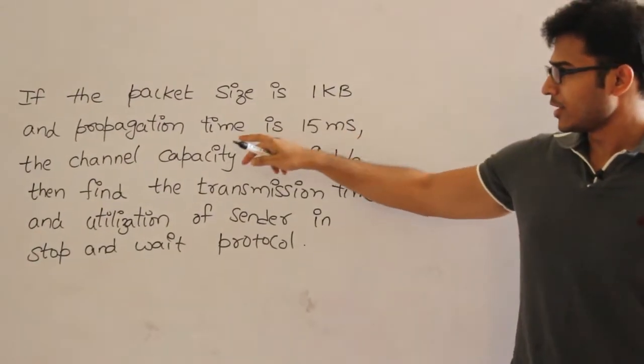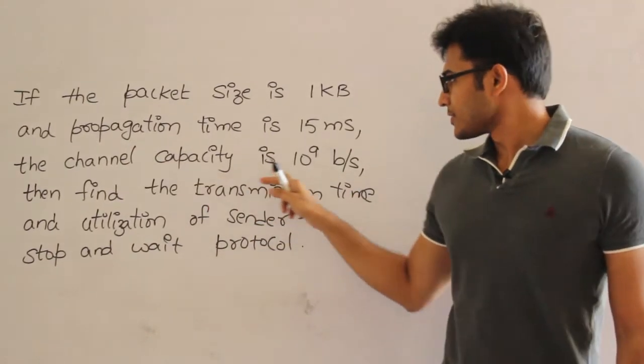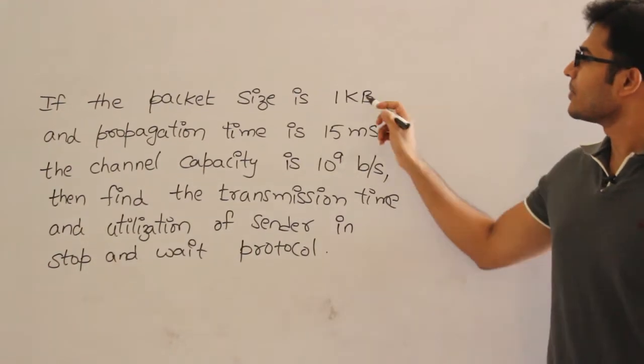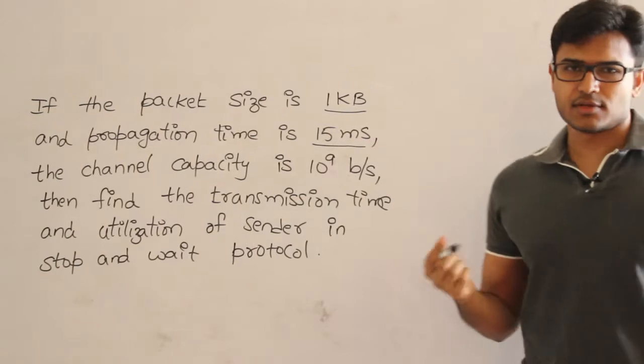Look at this. If the packet size is 1 KB and the propagation delay is 15 milliseconds, the channel capacity is 10^9 bits per second. So it is all normal. Packet size is 1 KB is fine and the propagation delay is 15 milliseconds. It is normal.